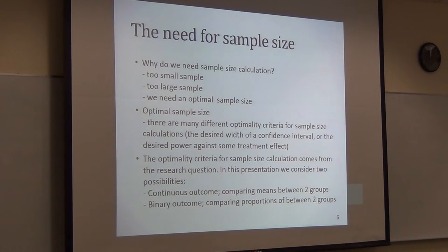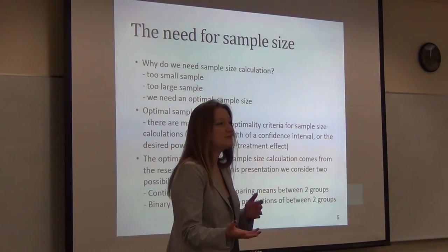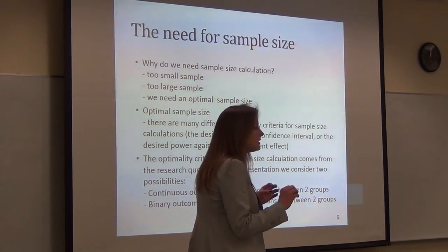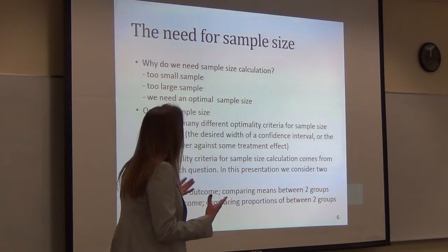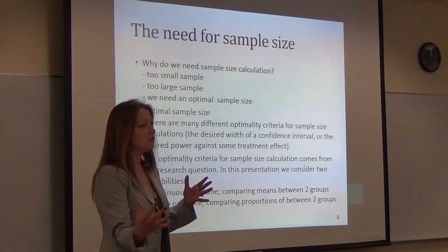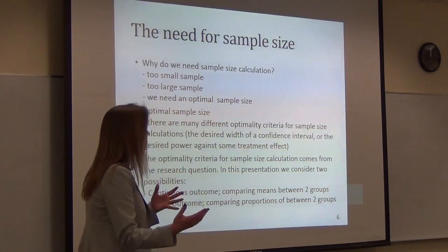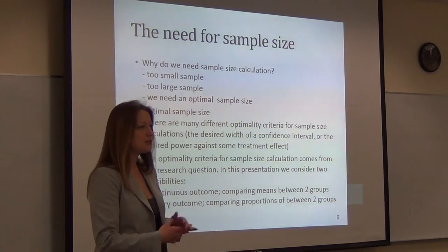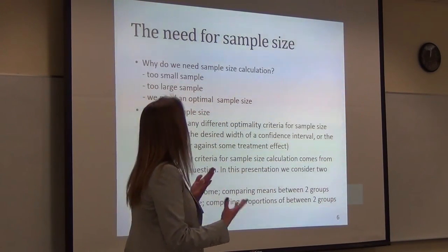Why do we need a sample size calculation? You have to fill it out on your IRB form and submit it for funding. It's important because we need to know what effect difference we can find. If the sample size is too small, you'll need a really large effect difference between your two groups to find a statistically significant difference. If it's too large, you have budget problems — you need too many patients, spend too much money, and probably won't get funded. So we need to find your optimal sample size.